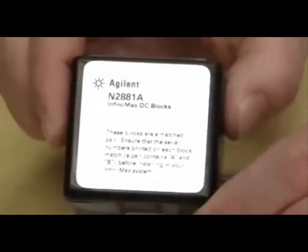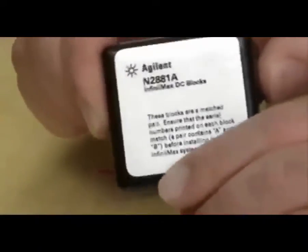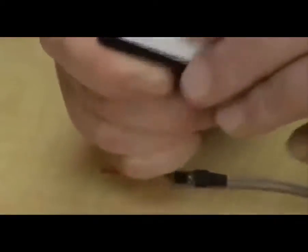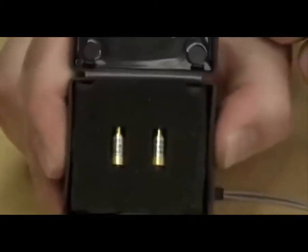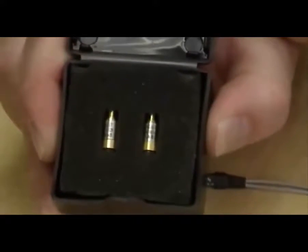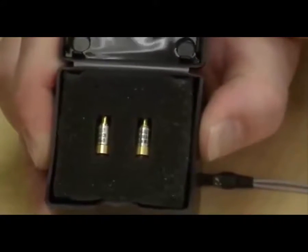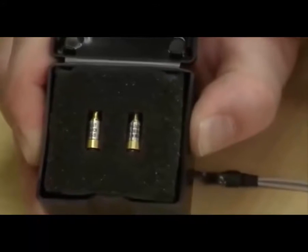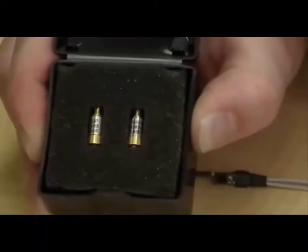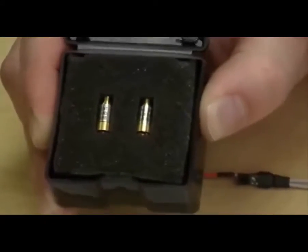When we calibrate the probes, if we're using the inline DC attenuators or DC blocks, these go between the probe head and the probe amp. However, for calibration purposes, we don't want to use them, especially the AC coupling caps because they block DC and we're going to do a DC calibration.